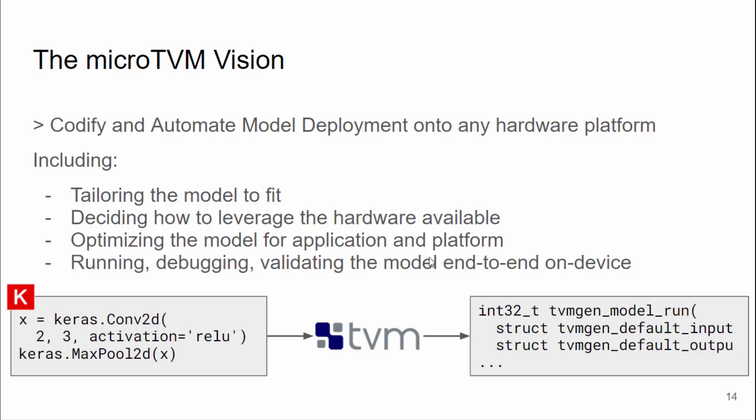Micro TVM aims to be a tool to help codify and automate the process of taking a model and deploying it onto any hardware target, taking into account the type of hardware available, the constraints of the individual application, and the model being deployed. What this really means is finding a way to integrate all of those languages from the previous slides into a tool and defining well-understood transitions between them that the community can get behind as an open source community.